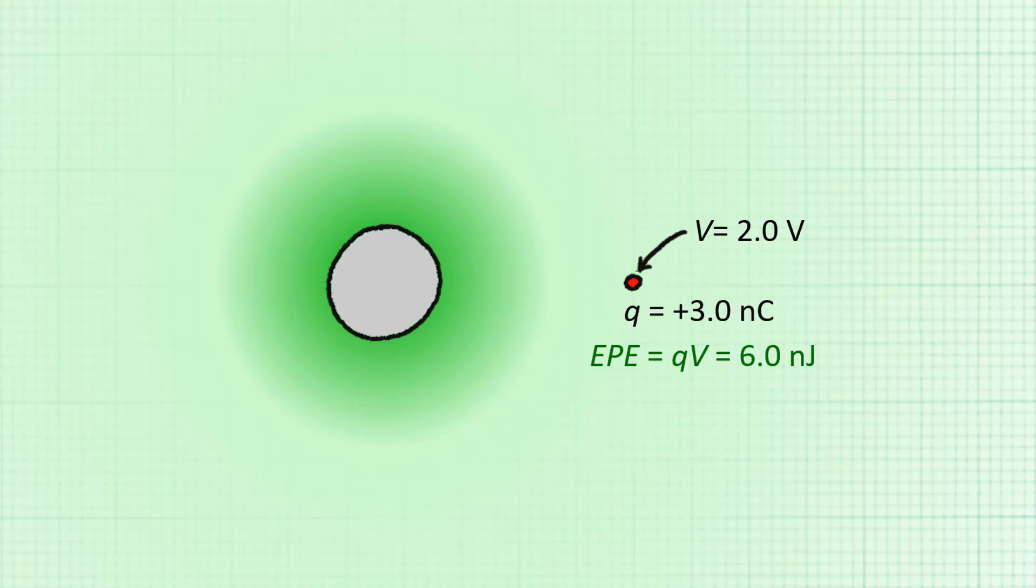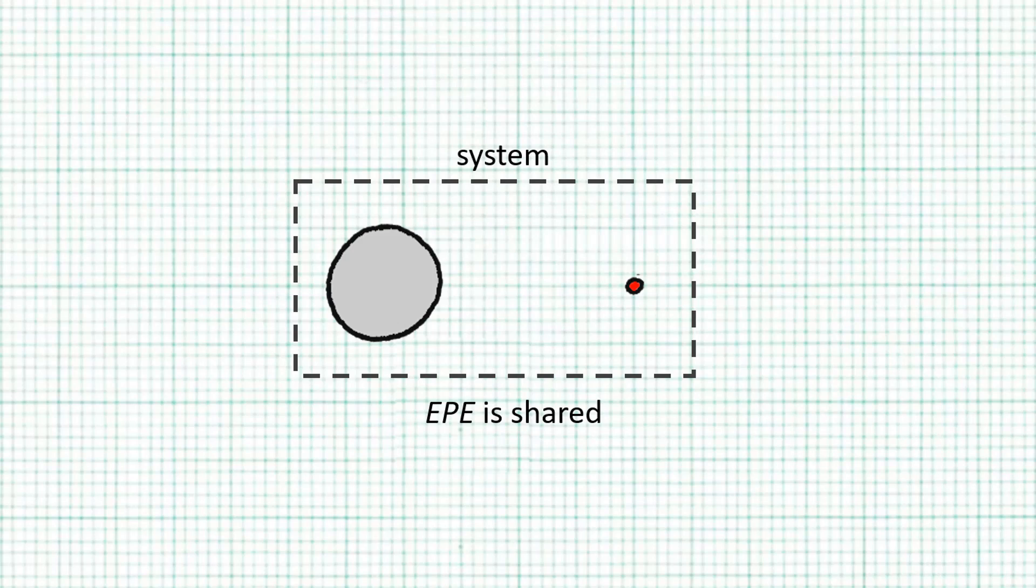Because 2.0 volts means 2.0 joules per coulomb and we have 3.0 nanocoulombs here. On the other hand, if we place a negative charge of negative 3.0 nanocoulombs here, then this test charge will have an EPE of negative 6.0 nanojoules. Strictly speaking, the EPE is stored in the system, meaning the EPE is shared between the charged ball and the test charge.